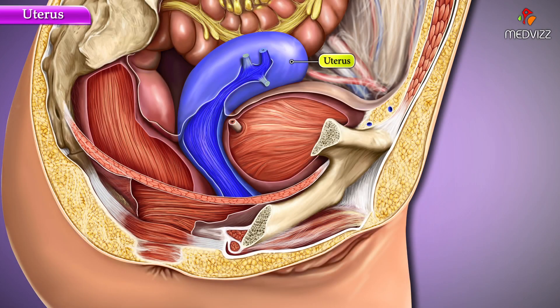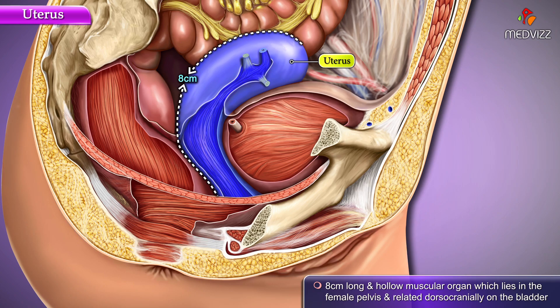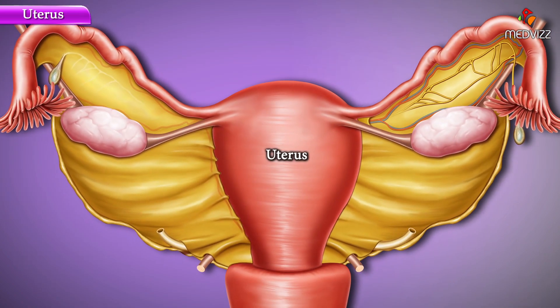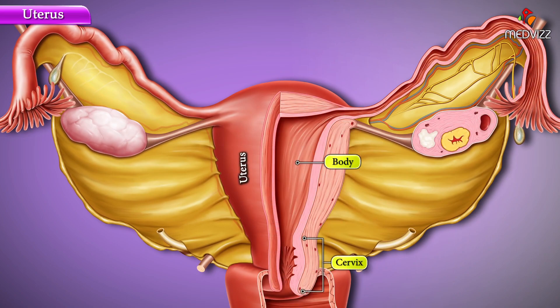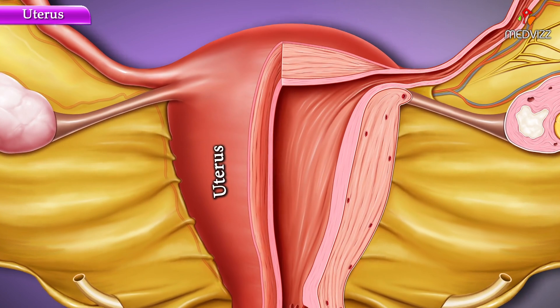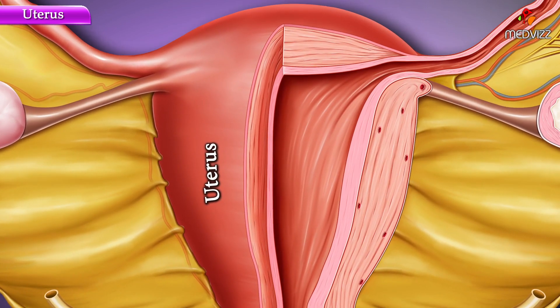The uterus, commonly referred to as the womb, is about eight centimeters long and is a hollow muscular organ which lies in the female pelvis, related dorso-cranially to the bladder. Here we can see various anatomical parts such as the body, cervix, and the isthmus. While its gross anatomy sounds pretty simple, its histology is a little more complicated.